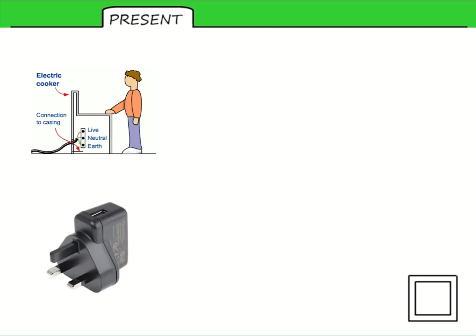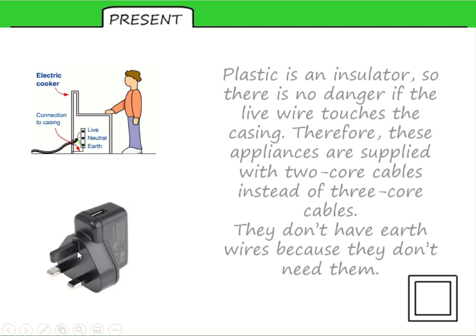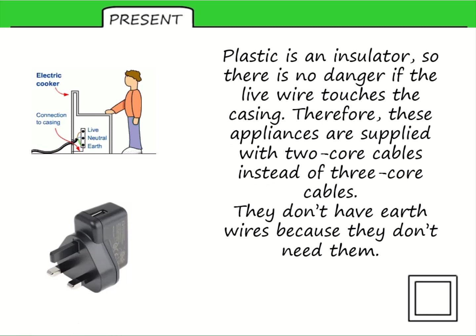Why is that — is someone just cutting costs? Well yes, but they're cutting costs in a safe way. They don't need an earth wire because of plastic. If the device you're using is made of plastic, it's an insulator, so there's no danger if the case is touched by a live wire. Usually in low voltage appliances or ones with plastic cases there will only be two wires inside your plug, because the earth is not needed. Usually in the exam we'll be talking about a standard three-pin, three-wire setup, but be aware that some devices don't have that earth wire.